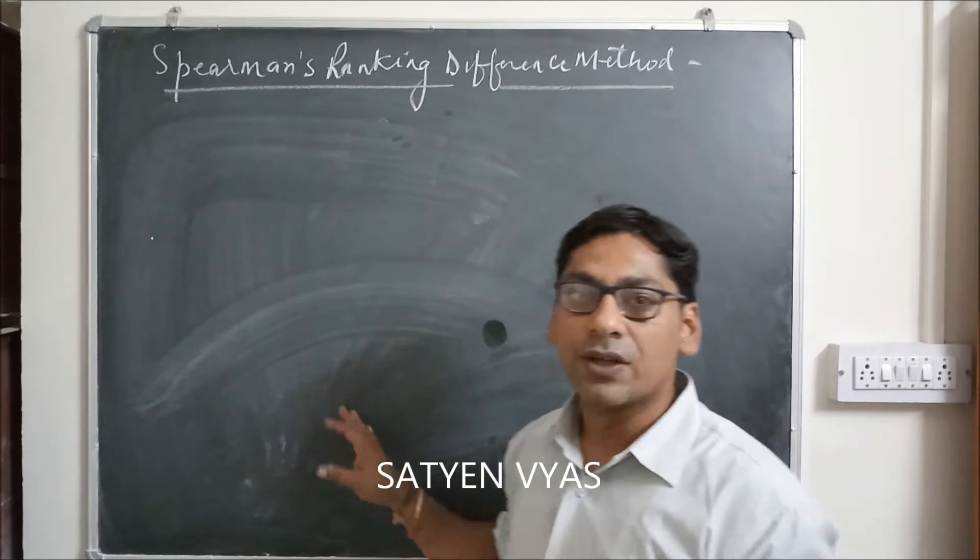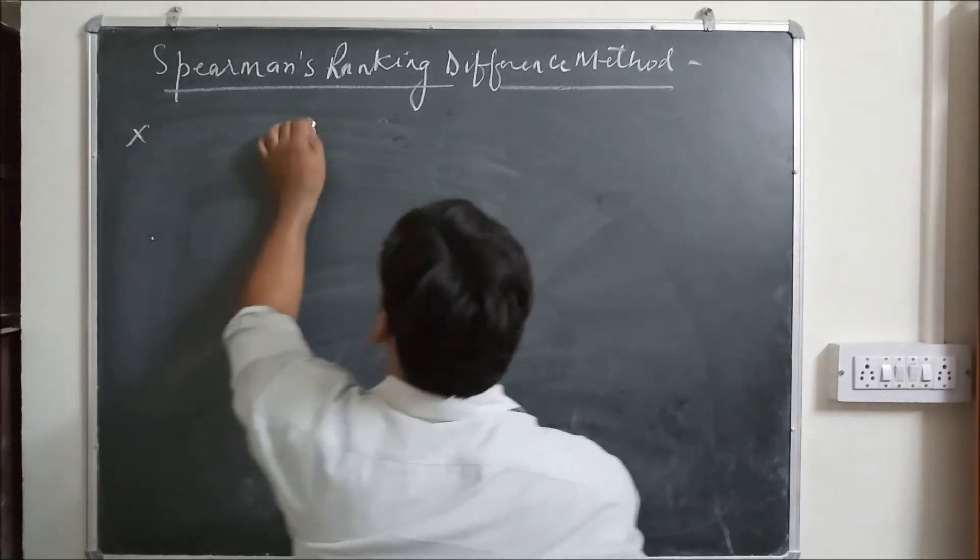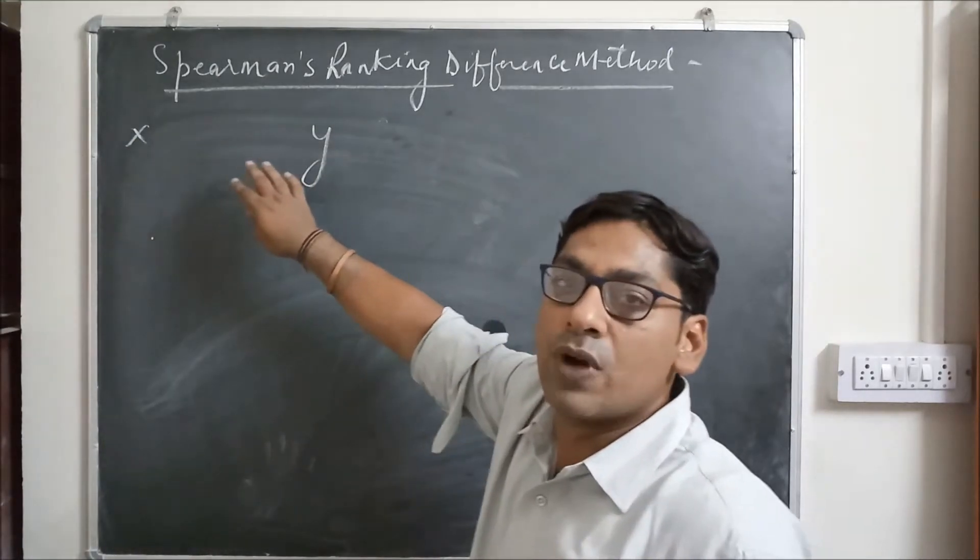It is the second method to calculate coefficient of correlation between the data. In this method, only individual series are given. Suppose you have given X and Y, these are two individual series.